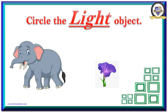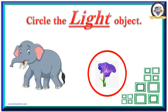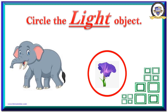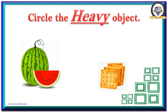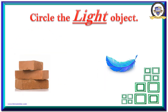The next question: elephant and flower — which is heavier? But you have to mark the lighter one. Which is lighter? Flower! Flower is the lighter one and elephant is the heavier one. Next one: you have to mark the heavier object — watermelon or biscuit. Which is heavy? Yes, watermelon! Watermelon is heavy and biscuit is light.